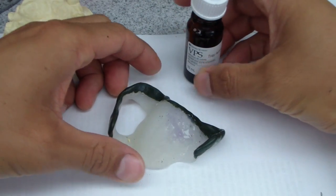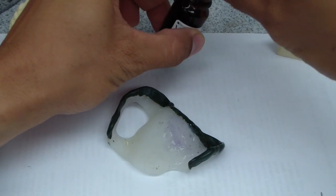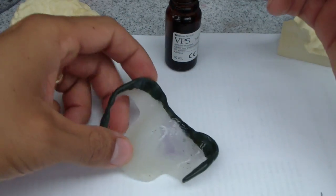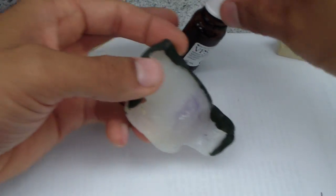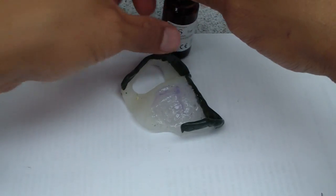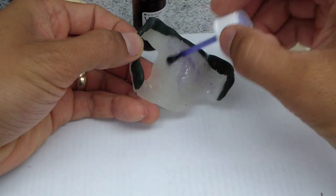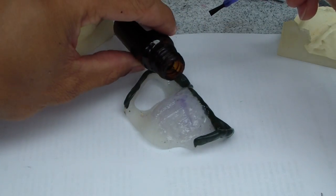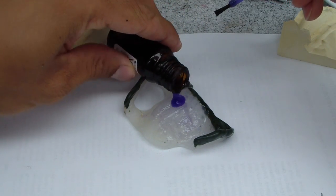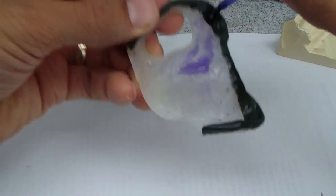Okay, so there are a number of studies indicating that adhesives significantly increase the retention of polyvinyl siloxanes, actually alginates as well, so we're just going to be taking some. Now this has been disinfected, so I can use the brush from the bottle. If not, just pour some on and use a disposable brush.